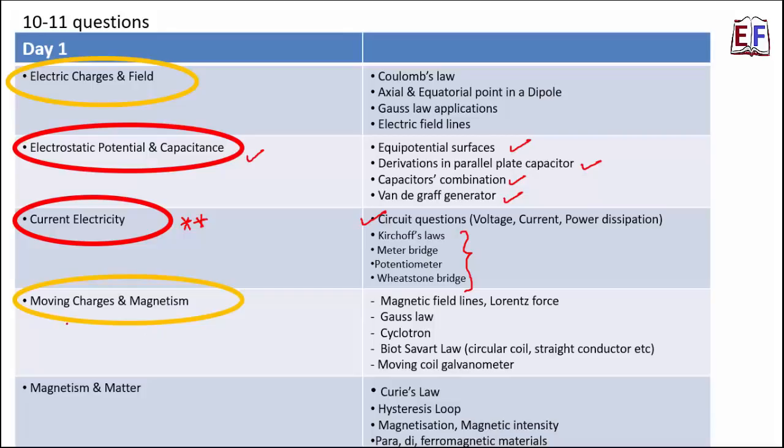Then we have moving charges and magnetism. Here properties of magnetic field lines, Lorentz force, Gauss law. Again, Gauss law is important. At the same time, how to apply Gauss law is also important. Cyclotron. Sometimes you may have a question, a long answer question where they ask you to explain the construction and working of a cyclotron. Biot-Savart law. Again, not just the law, but also how to use Biot-Savart law to calculate for a circular coil or a straight conductor. So how exactly do you calculate the magnetic field at certain points of these conductors? Moving coil galvanometer. Because sometimes you get questions from this topic.